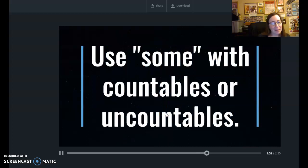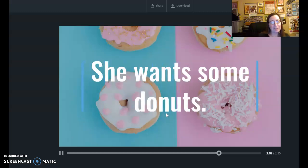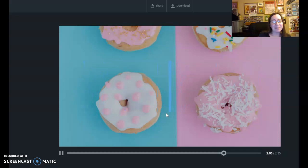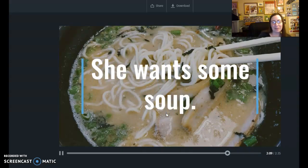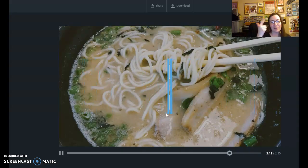You use some with countables or uncountables. So you can say I want some apples or I want some milk. She wants some donuts. Yum. She wants some soup. See, you can count donuts. One, two donuts.